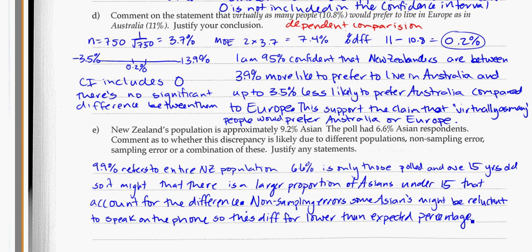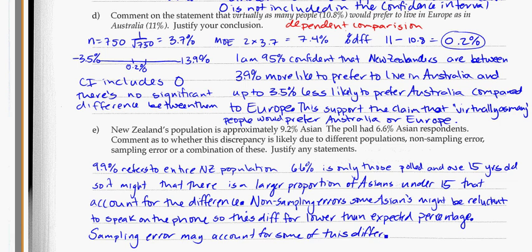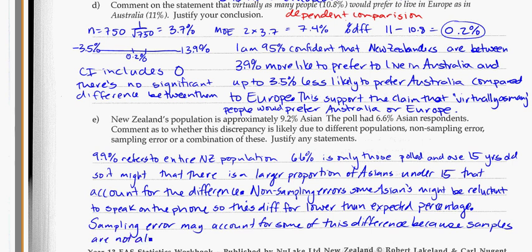Sampling error. Sampling error is just randomness. They're doing this poll randomly, doing everything in their power to make it fair, consistent, and accessible throughout the whole country. But is it always 100% correct? Is a sample always exactly the same as a population? Sampling error may account for some of this difference, because samples are not always 100% accurate in reflecting the population.